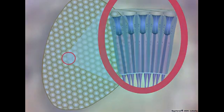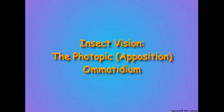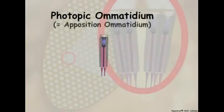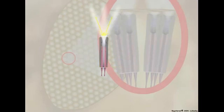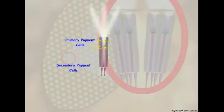Let us see how insect compound eyes function to detect light and perceive visual information. Insect species that are active during the daytime when light is abundant have photopic ommatidia in their compound eyes. The photopic ommatidium was earlier called an apposition ommatidium because the base of the crystalline cone is in direct contact, or in apposition, to the rhabdom. In photopic ommatidia, incoming light is focused on the base of the crystalline cone and directly onto the rhabdom, the light-sensitive sensory region of the retinula cells. Light rays that enter the corneal lens at angles are absorbed by screening pigments located in the cytoplasm of the pigment cells that surround photopic ommatidia.